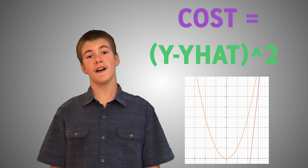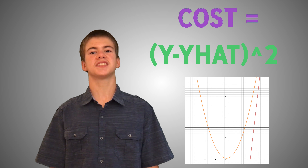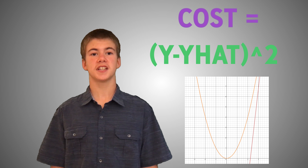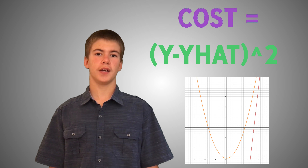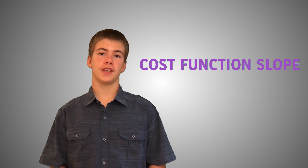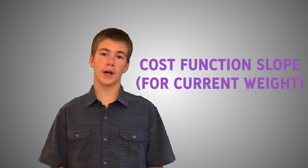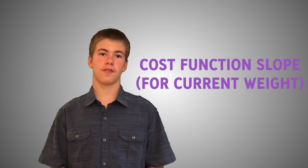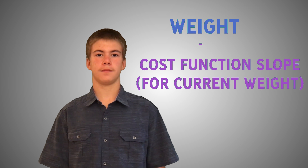Now let's see what happens when we use the cost function of the type y minus y hat squared. As I mentioned before, you can imagine this as a parabola. Now we can look at the slope of this function for a given value of a weight. Let's say this slope is a large positive value. This gives us two important pieces of information. First, to reduce the cost, we need to reduce the value of the weight. But even more importantly, the fact that the value of the slope is large indicates that we are very far from the optimum weight value, and therefore we can reduce the weight quite a bit in our next iteration. We could simply subtract the value of the cost function slope for the current weight value from our weight.